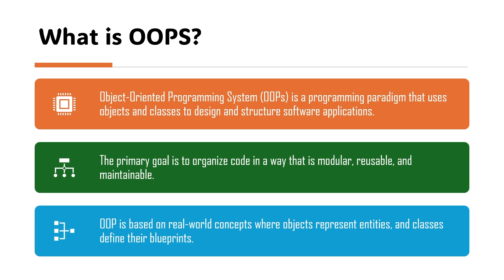So let's understand what is OOP. OOP is nothing but object oriented programming system, and it is a programming paradigm that uses objects and classes to design and structure software applications. The primary goal is to organize code in a way that is modular, reusable, and maintainable. Object oriented programming is based on real world concepts where objects represent entities.